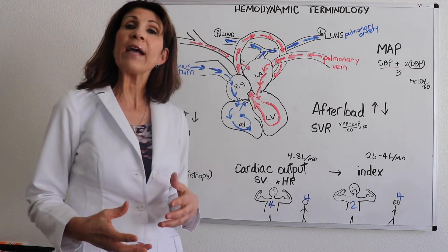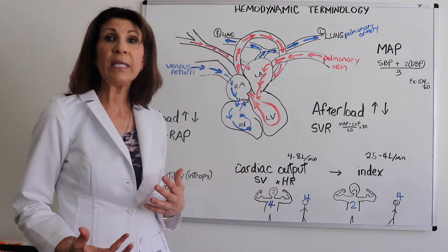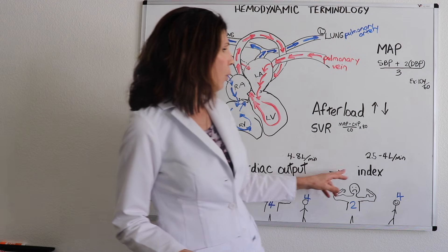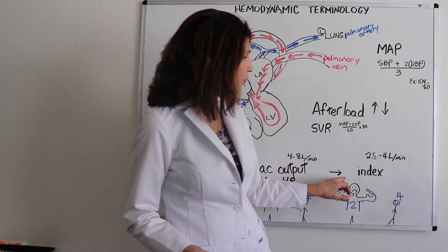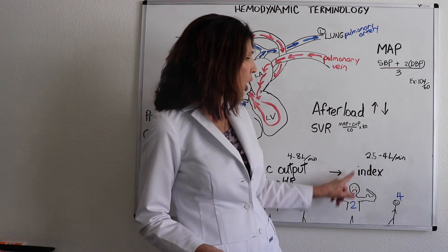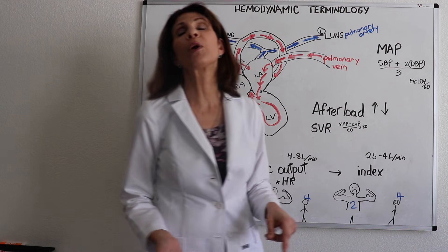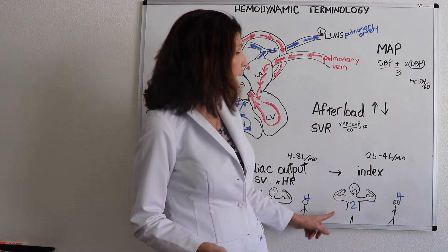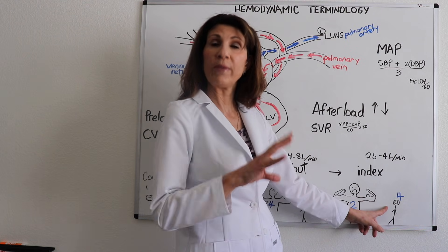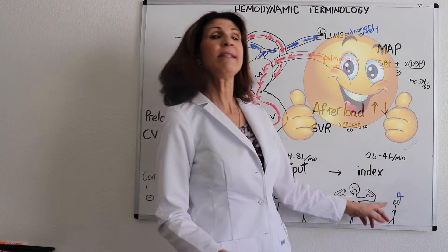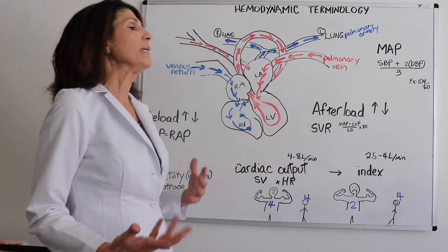To answer that, we use the cardiac index, which factors in body surface area so you know precisely whether cardiac output is sufficient to meet the system's needs. When we factor in Arnold's cardiac output of four with his body surface area, his cardiac index is two — below the normal range of 2.5 to 4 liters per minute. Tom's cardiac index, factoring in his smaller body surface area, is four — sufficient.